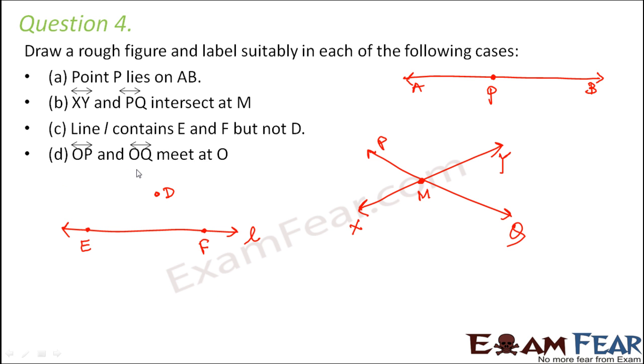OP and OQ meet at O. So let us say this is OP. This is O and this is P. And this is OQ. So OP and OQ meet at point O. So by reading these statements it was pretty easy or pretty simple to draw these shapes.